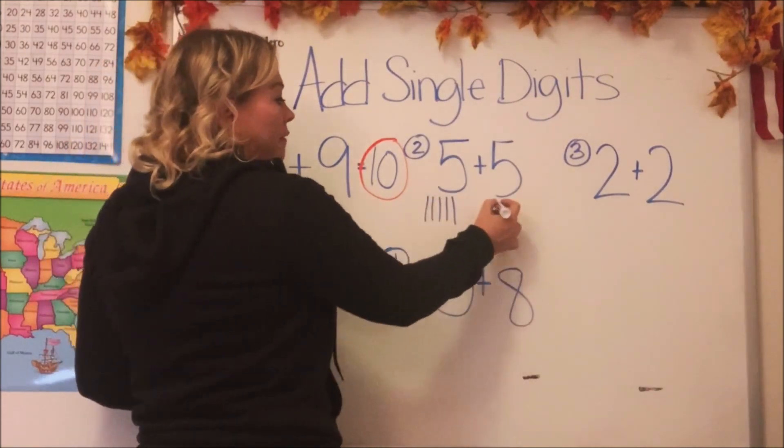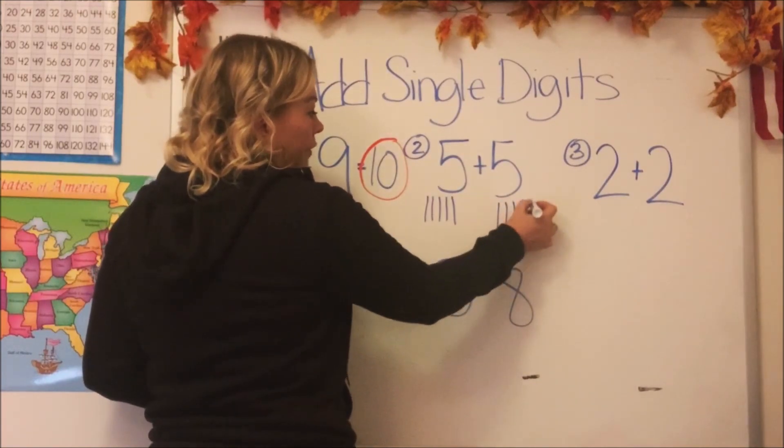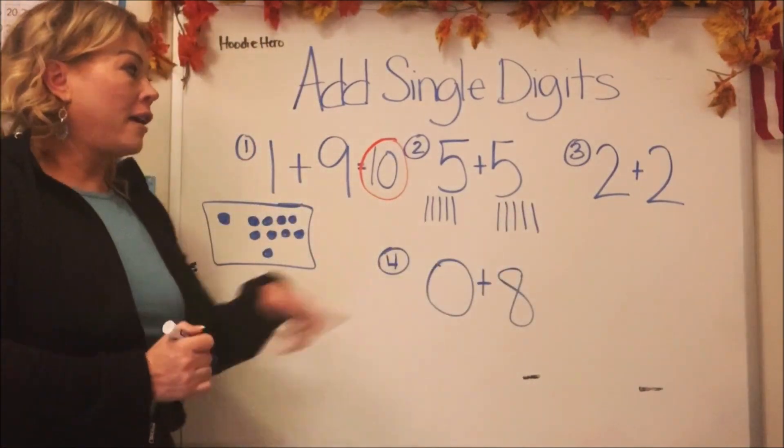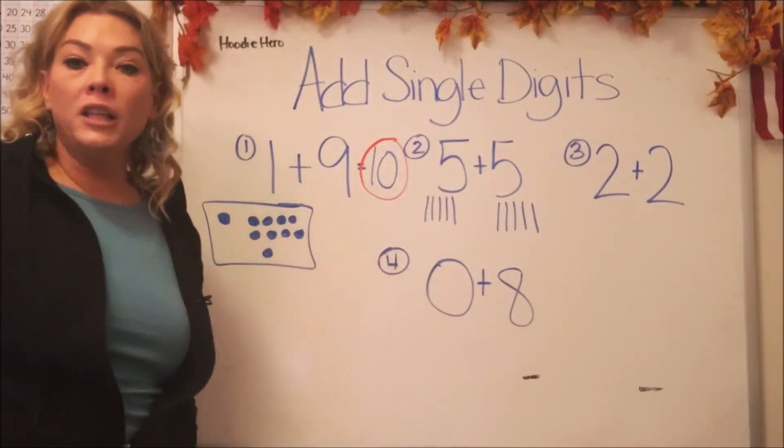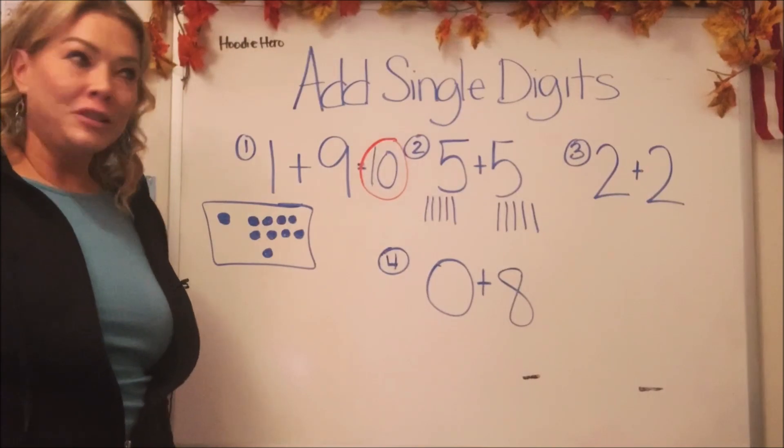And then we have five again. One, two, three, four, five. Now to add those together, we're just going to count all of our lines and that'll tell us what five plus five is. Should we do it?